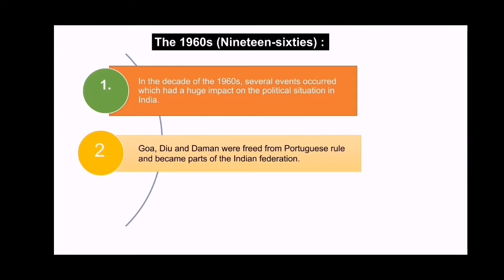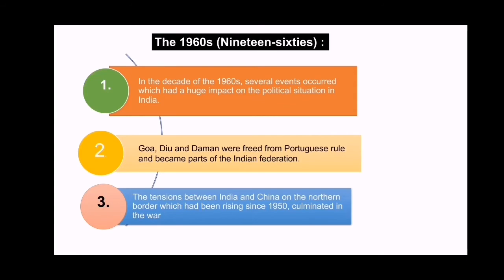The third point is that the tension between India and China on the northern border, which had been rising since 1950, culminated in the war of 1962 between the two countries. This war was fought in the region of the McMahon Line. The McMahon Line lies beyond Arunachal Pradesh. This line was set up when we were under British rule. McMahon is the name of the person who drafted the map of India, which is why the line is called the McMahon Line.